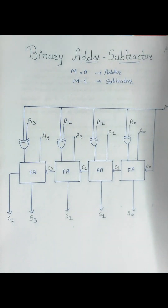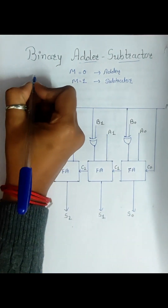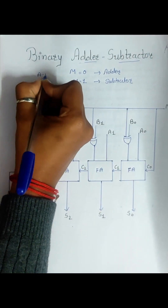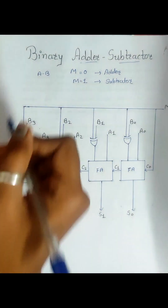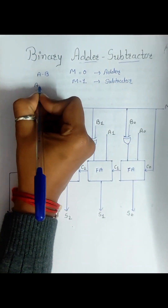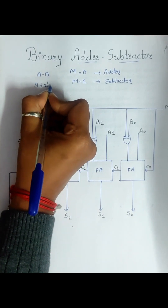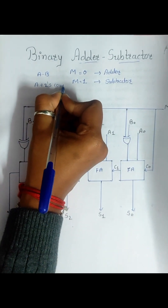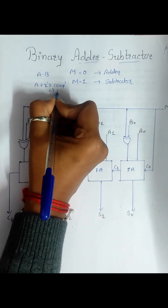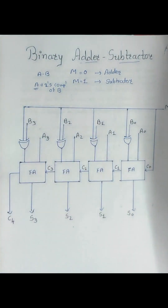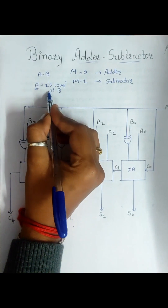Before that, you should be aware of how to perform binary number subtraction in a basic computer. Whenever we need to perform A minus B, we are going to add the 2's complement of B along with A. So it's not really a subtraction operation — ultimately, we perform the addition of A with the 2's complement of B.